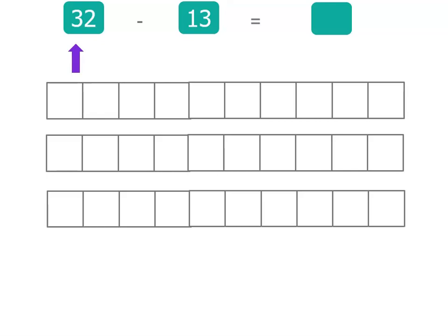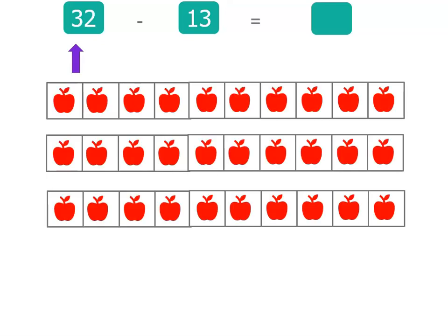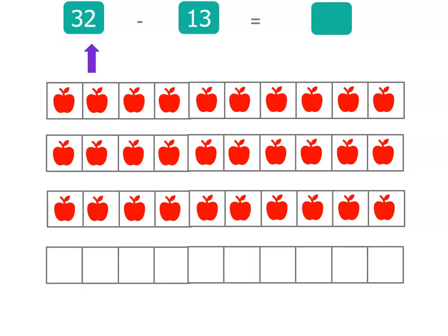That's 3 tens, so let's have 3 groups of 10 apples or 30 apples, and then we've got another 2. So in our 10 frame we only have 2 apples. Now we're taking away 13, that's one of the tens and 3 of the units.